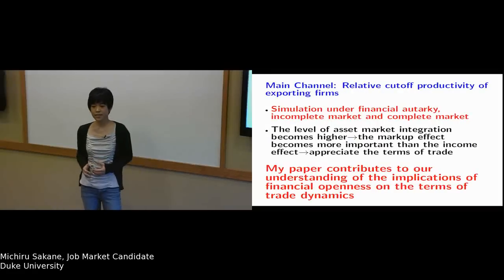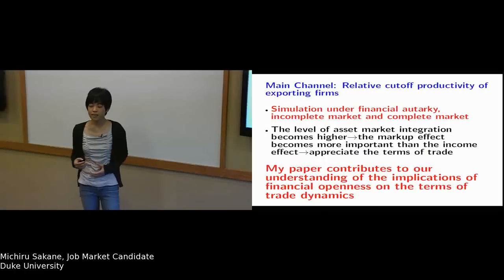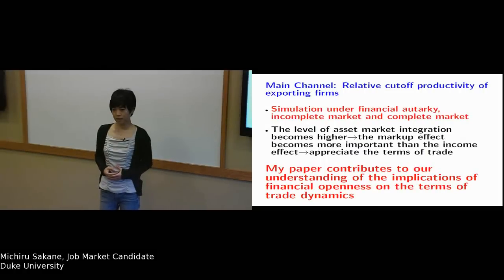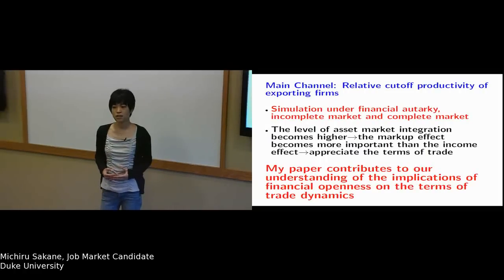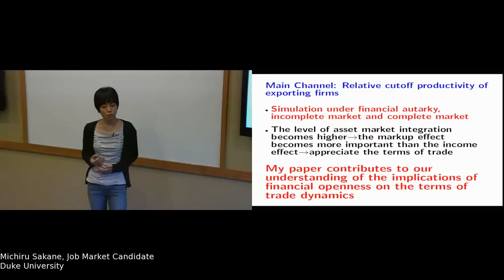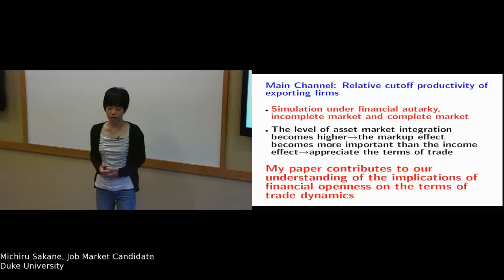In these cases, only more productive foreign firms can export to the home market. This changes the relative cutoff productivity of exporting firms — specifically, the relative cutoff productivity of foreign exporting firms goes up. Through this channel, the terms of trade appreciates in response to an aggregate productivity shock.